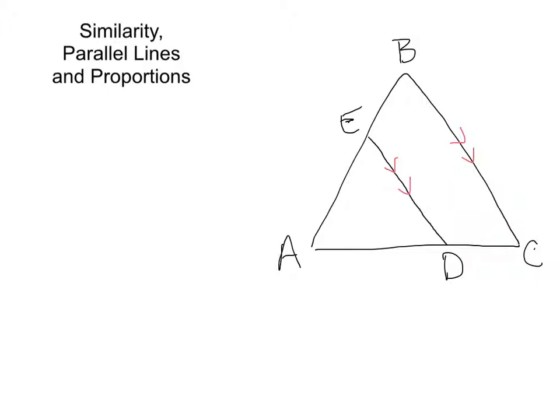Let's think about what we know about these two triangles. First, let's look at the angle located at C. By the rules of parallel lines, we know that the corresponding angle is also the same. Now let's look at the angle at B. Again, by parallel lines, we know that the corresponding angle up here is the same. And angle A is angle A — the same in both triangles.